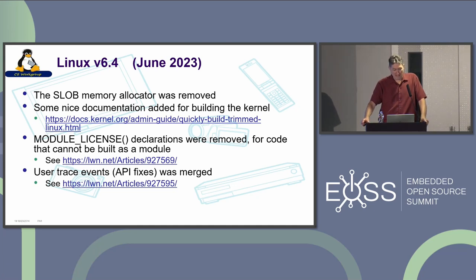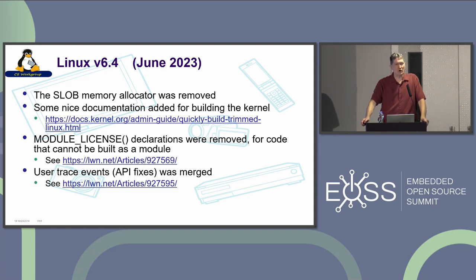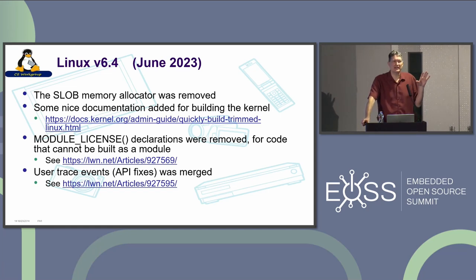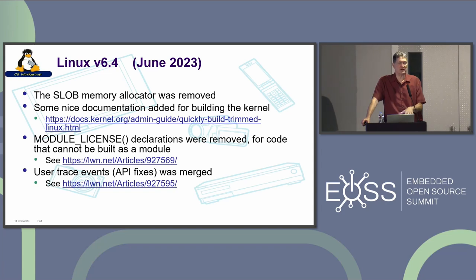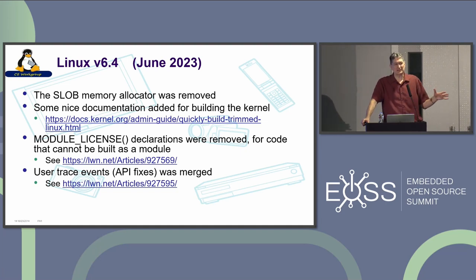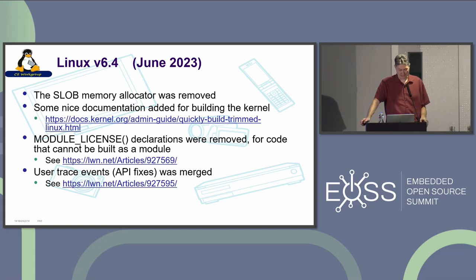In Linux 6.4, the SLOB memory allocator was actually removed. There's some nice documentation that was added for building the kernel, so if you're kind of a newbie, the kernel documentation continues to get filled out. There was a kerfuffle about module license declarations — someone wanted to analyze whether things in the kernel could be built as modules, and they were using the MODULE_LICENSE macro as an indicator, but it turned out it was used in situations where things still couldn't be modules. So that's been cleaned up. And then user trace events API fixes were merged.